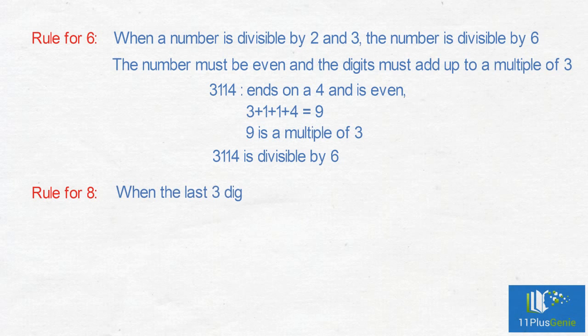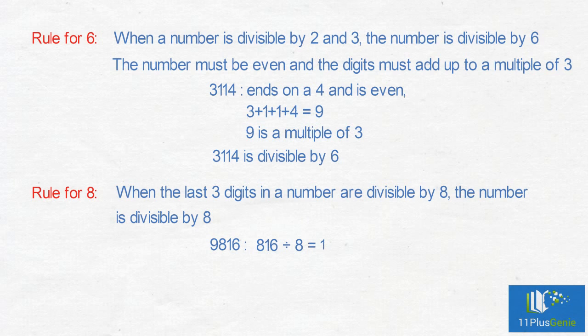Rule for 8: When the last 3 digits in a number are divisible by 8, the number is divisible by 8. 9,816: 816 divided by 8 equals 102, so 9,816 is divisible by 8.